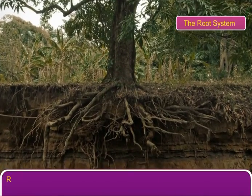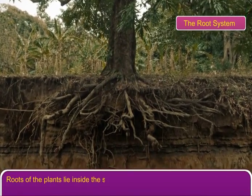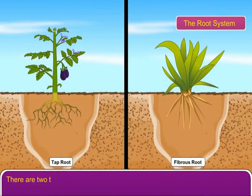The root system. Roots of the plants lie inside the soil. There are two types of root systems: tap root system and fibrous root system.